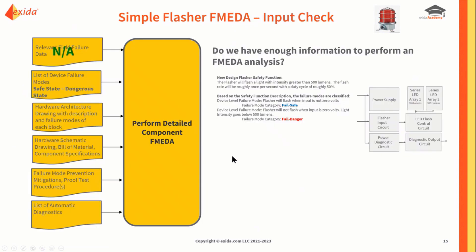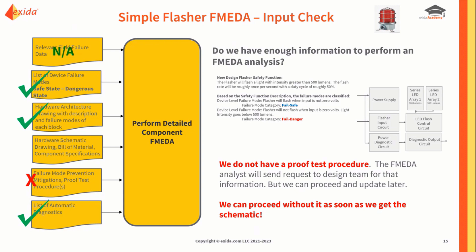Let's look at the input we need to do a good FMEDA. We know the safe state and the dangerous state — that's well-defined. We have a hardware architecture drawing with descriptions and failure modes of each block. We have a list of the one automatic diagnostic: the power diagnostic circuit and the diagnostic output circuit. We're missing any other mitigations — we don't have any. We also don't have a proof test, so let's proceed with the FMEDA without it and add that later.